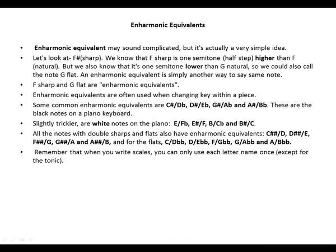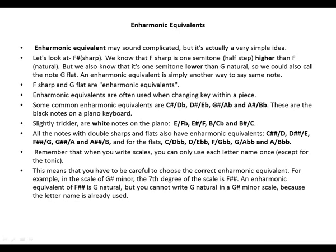Remember that when you write scales, you can only use each letter name once, except for the tonic. This means you have to be careful to choose the correct enharmonic equivalent. For example, in the scale of G sharp minor, the seventh degree of the scale is F double sharp. The enharmonic equivalent of F double sharp is G natural, but you cannot write G natural in a G sharp minor scale because the letter name G is already used.